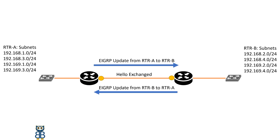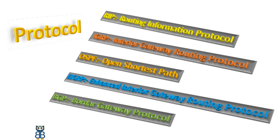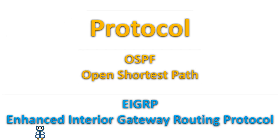Routing protocols are used to automatically and dynamically exchange routing information between routers. There are several routing protocols to choose from, each with its own pros and cons, as each routing protocol is designed to be well-suited to a particular network implementation scenario. Two of the most popular routing protocols used today are Enhanced Interior Gateway Routing Protocol, or EIGRP, and Open Shortest Path First, or OSPF.